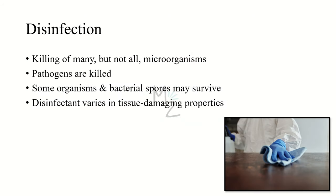Disinfection is the killing of many but not all microorganisms. For adequate disinfection, pathogens must be killed, but some organisms and bacterial spores may survive. Disinfectants vary in their tissue-damaging properties, from corrosive phenol-containing compounds used only on inanimate objects to less toxic materials such as ethanol and iodine, which can be used on skin surfaces.